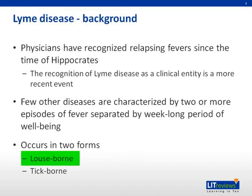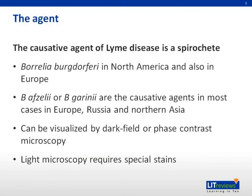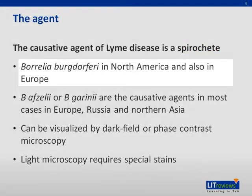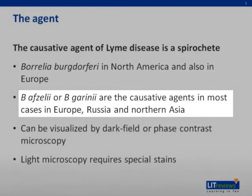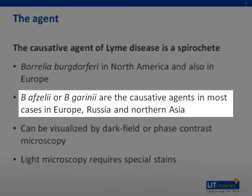Louse-borne relapsing fever, caused by Borrelia recurrentis, is a more severe infection. The causative agent of Lyme disease is a spirochete, and the principal agent is Borrelia burgdorferi in North America and also in Europe. Borrelia epzelii and Borrelia garanii are causative agents in most cases in Europe, Russia, and Northern Asia, and they cause a variant of Lyme disease.